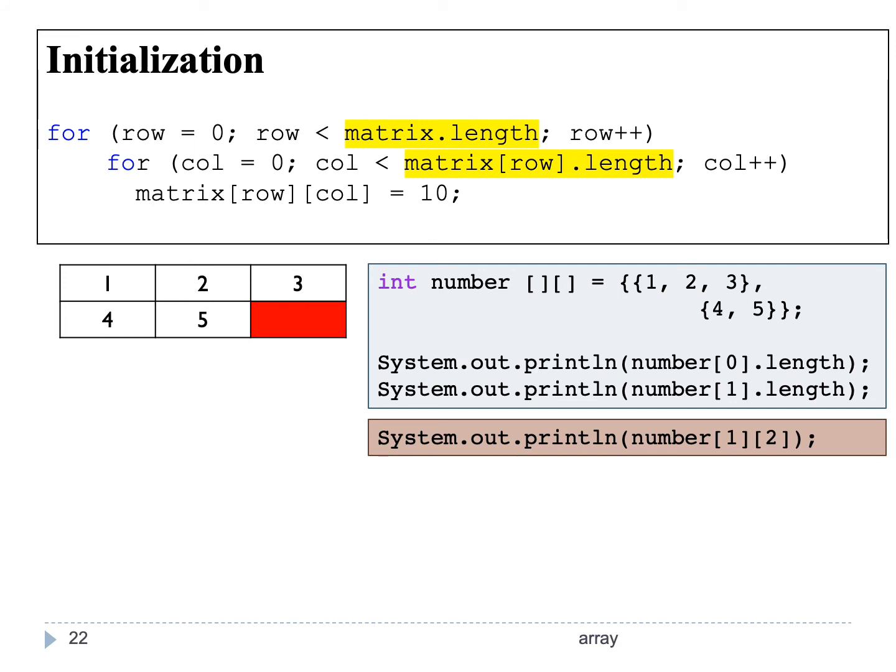To be safe in this kind of situation, we can always use matrix[row].length so that the size for the columns is not fixed and can be changed accordingly based on the rows themselves.